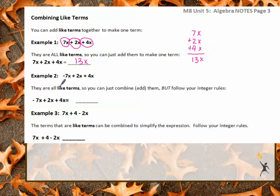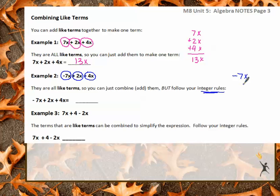For the next example, we have negative 7X plus 2X plus 4X. They are all like terms, so you can combine them, but make sure you watch out for those integer rules. You have negative 7X, positive 2X, and positive 4X — you need to be careful with that negative. If we add those together, we get negative 1X, which we can also write as just negative X. Either way is correct.